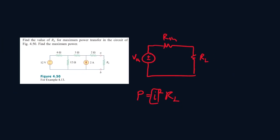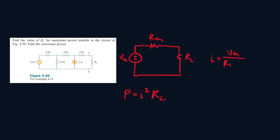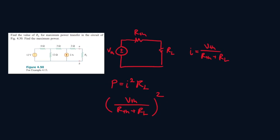We know what I can be. Since V equals IR, I will be equal to V-Thevenin all over the total resistance, which is RTH plus RL. We can plug that into I, giving us VTH over (RTH plus RL) squared, times RL, and this equals power.